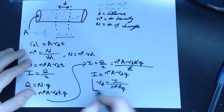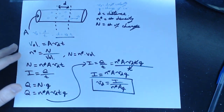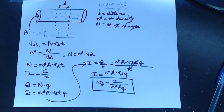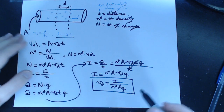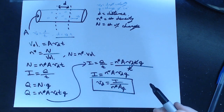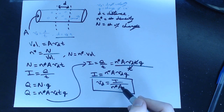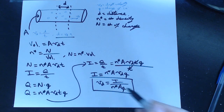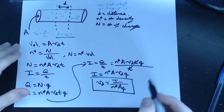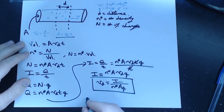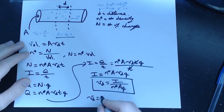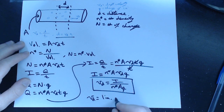So now we have an expression for the drift velocity of an electron. What's interesting is that if you plug in typical numbers for current, number density, area, and the charge of an electron, you'll find that the drift velocity of an electron comes out to be about 1 inch per 22 seconds.